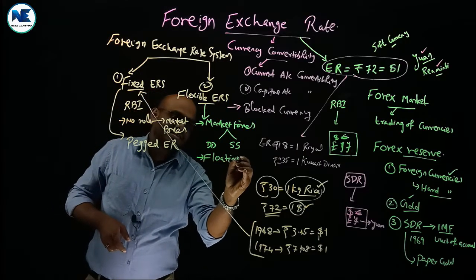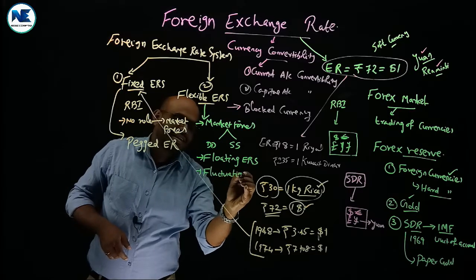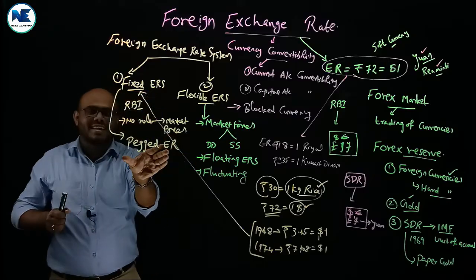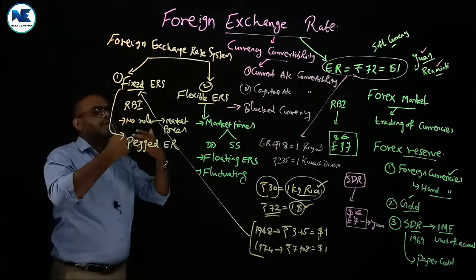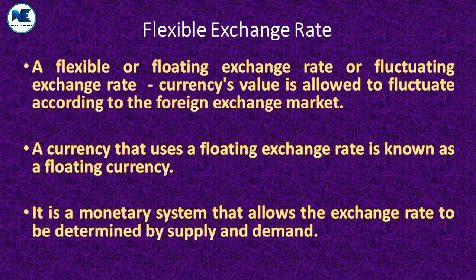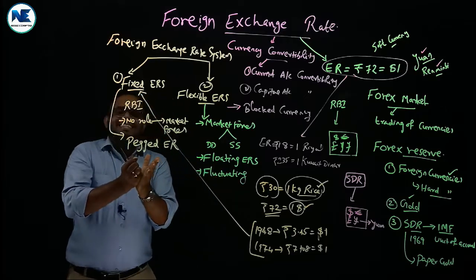In a flexible exchange rate system, the exchange rate is determined not by the RBI, government, or central bank, but by market forces — that is, demand for foreign currency as well as supply of foreign currencies. It is also known as the floating exchange rate system or the fluctuating exchange rate system. The currency's value is allowed to fluctuate according to the foreign exchange market based on demand and supply. A currency that uses a floating exchange rate is known as a floating currency.